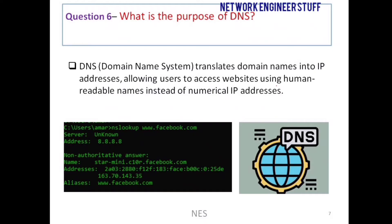Question number six: what is the purpose of DNS? DNS stands for Domain Name System, and it basically translates domain names into IP addresses. For example, using NS lookup on facebook.com resolves it to a specific IP address. Because of DNS we can access websites using human-readable names — it is much easier to remember www.facebook.com than an IP address like 163.70.143.35. That is the main purpose of DNS.